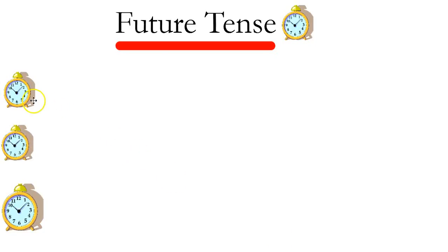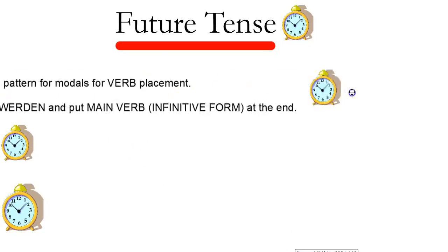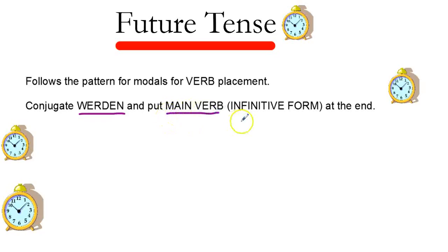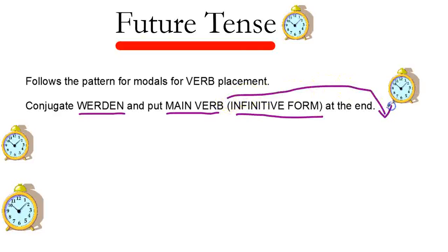The future tense in German is very similar to modals or helping verbs, following that same pattern for verb placement. We'll conjugate 'werden' and put the main verb in its infinitive form at the end of the sentence — all the way to the end.